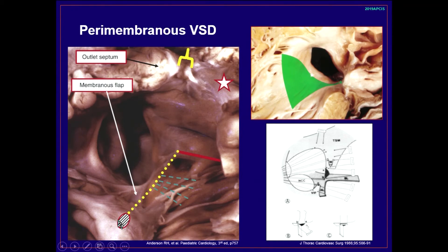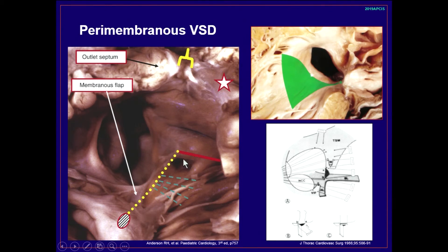The AV node is located in the Koch triangle, as seen in the normal heart. The penetrating bundle incorporates the central fibrous body and runs just below the membranous flap, so it is very important to make stitches not too deeply in this area. The non-branching bundle runs along the left septal side, a little away from the crest of the interventricular septum, then makes the left bundle branches. The right bundle branch penetrates the interventricular septum toward the base of the medial papillary muscle. This cartoon shows how to make the stitches in closing VSD in the perimembranous VSD with membranous flap.